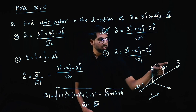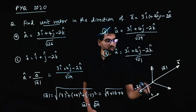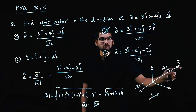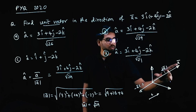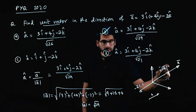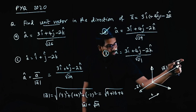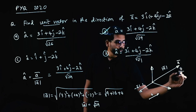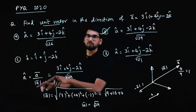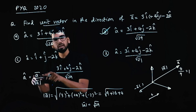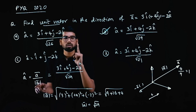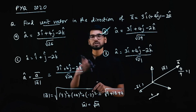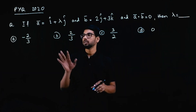So a unit vector is a vector with length 1. A unit vector in the direction of ā: how can we get it? ā divided by its magnitude |a|. If the length is 4, divide by 4 to get 1. That is the concept we are using here — ā divided by |a| gives you the unit vector. Next question.